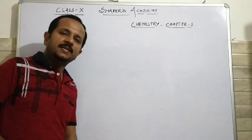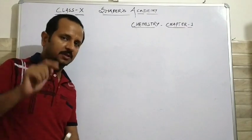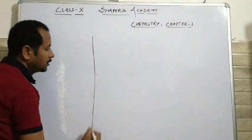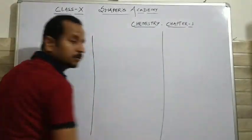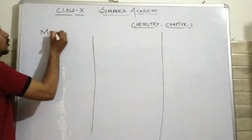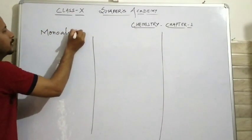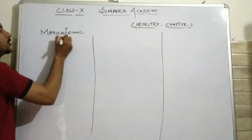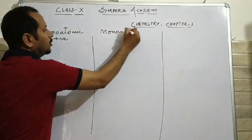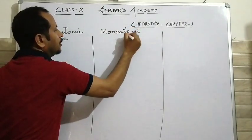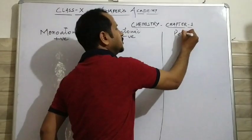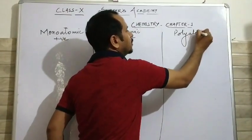In your standard 9th book on page number 37, you will be getting a table consisting of three columns. In the first column you will be getting monoatomic positive ions. In the second column, monoatomic negative ions. And in the third one, you will be getting polyatomic ions.